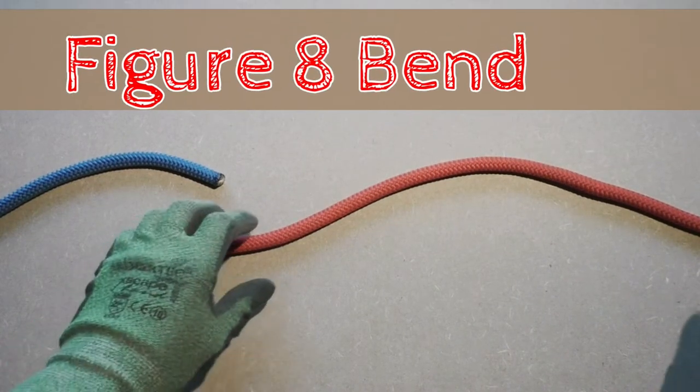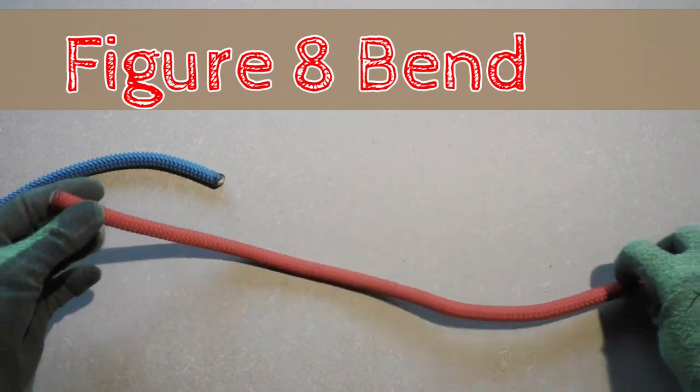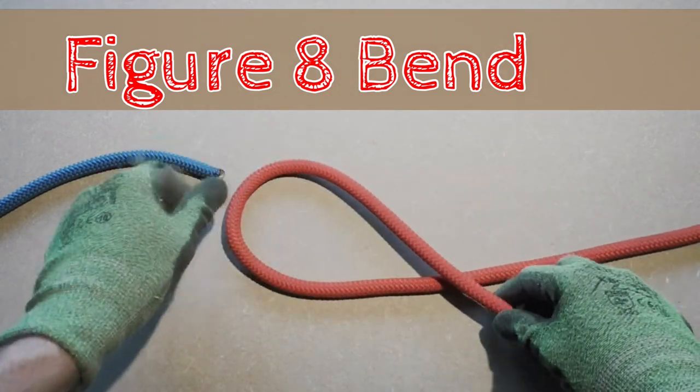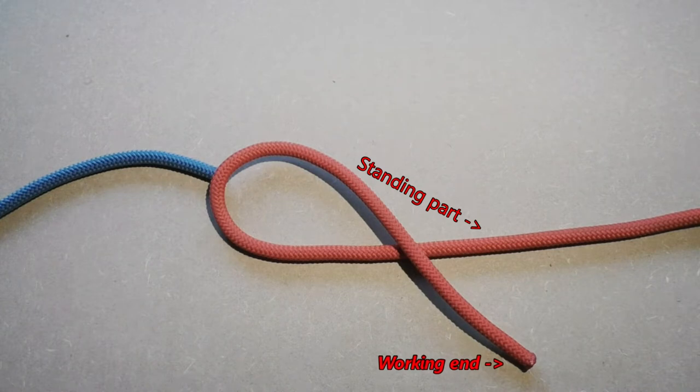The Figure 8 Bend is used to tie two ropes together. It's also known as the Flemish Bend. We start with the red rope, forming a loop by taking the working end and bringing it over the standing part of the rope.